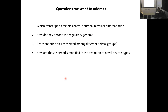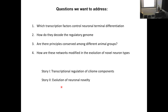Today I'm going to tell you about two unpublished stories. One has to do with the terminal differentiation process, but focusing not on a neural type but on an organelle — the cilium. The second story is about the evolution of new functions in neurons.